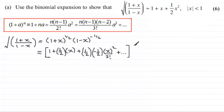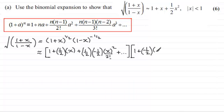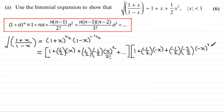This is multiplied by (1 − x)^(−1/2). Here a is −x and n is −1/2. So we get: 1 + (−1/2)(−x) + (−1/2)(−3/2)/2! × (−x)² + … That gives us 1 + x/2 + 3x²/8 + … again keeping terms only up to x squared.